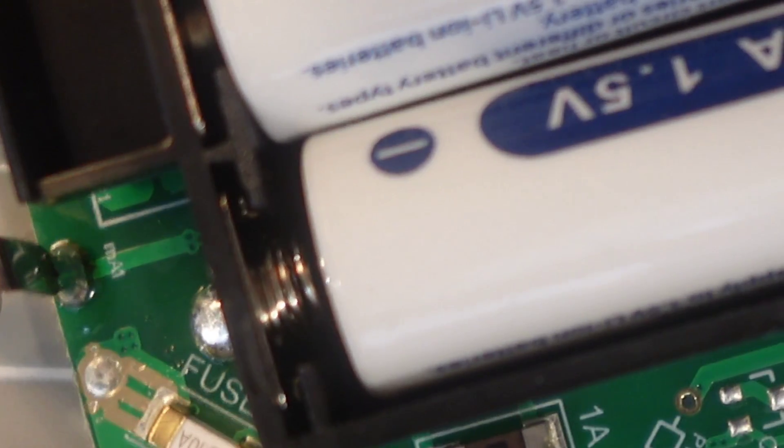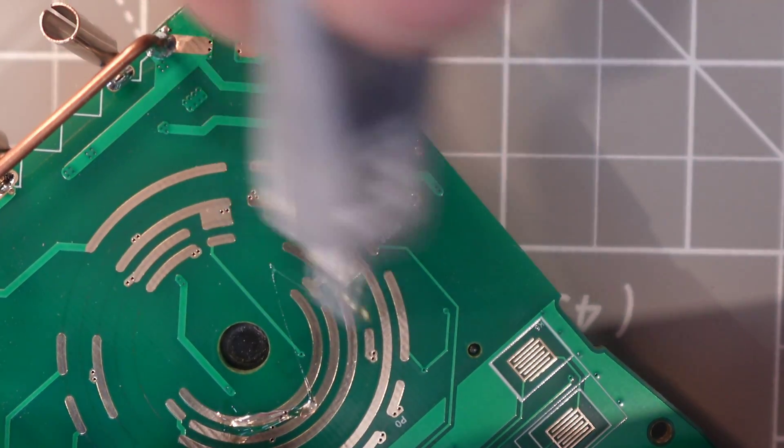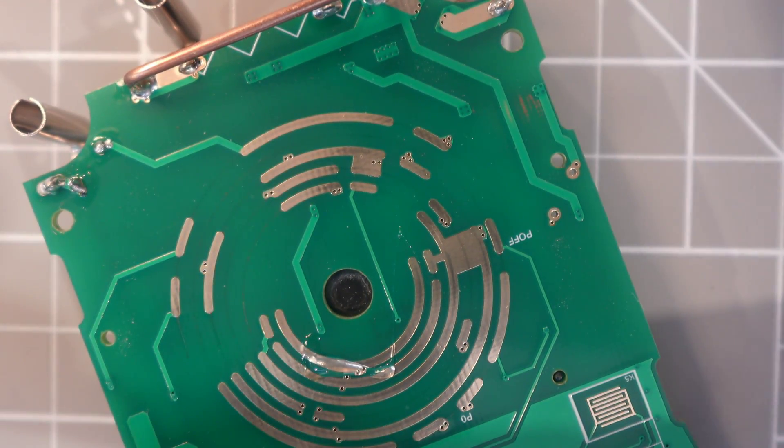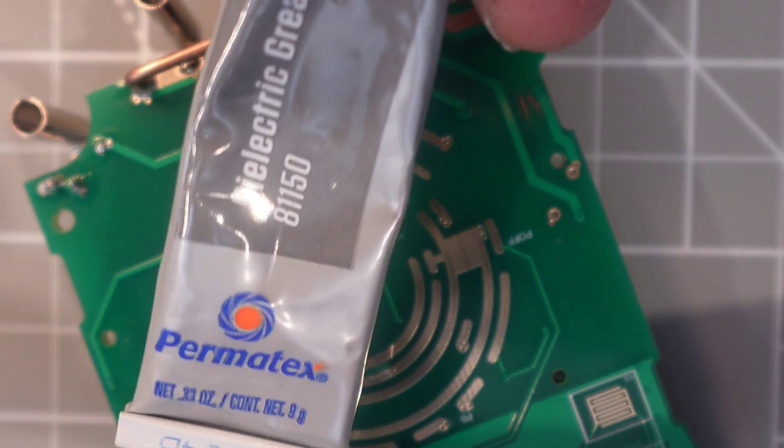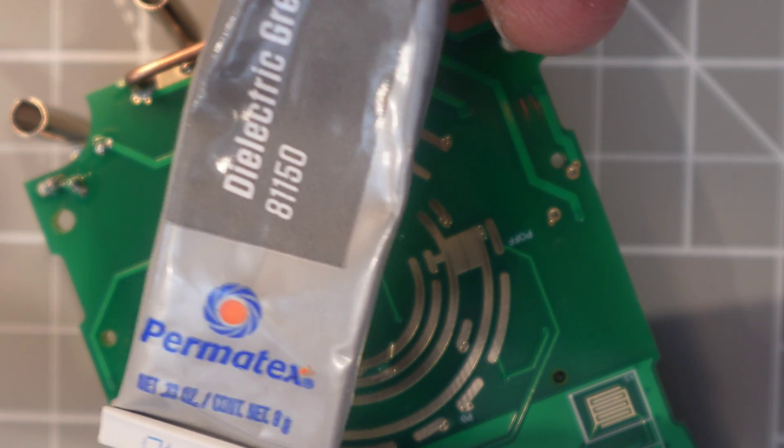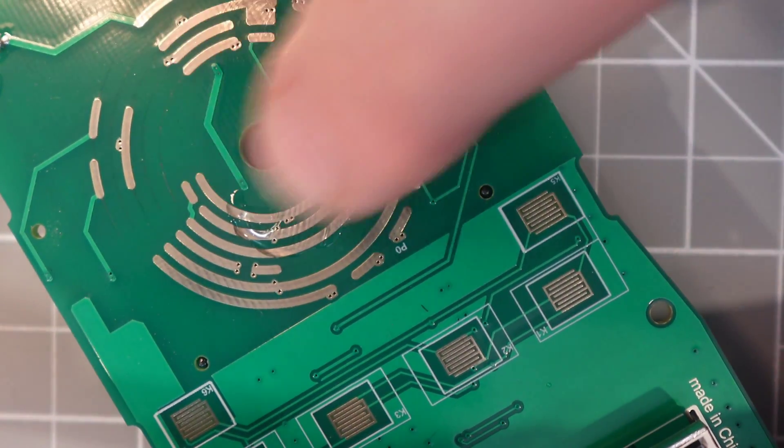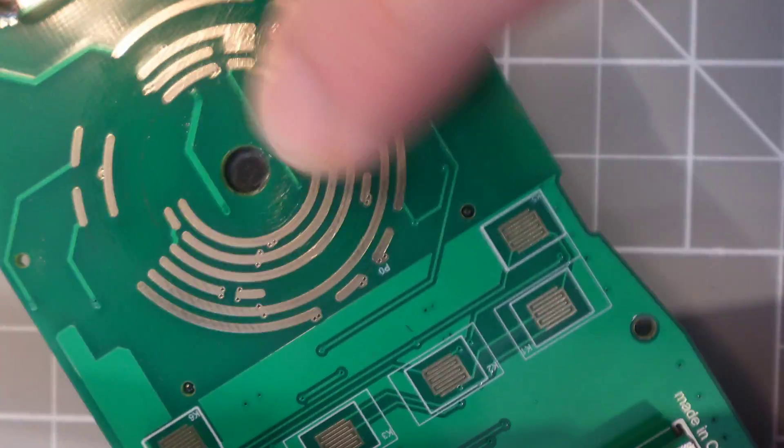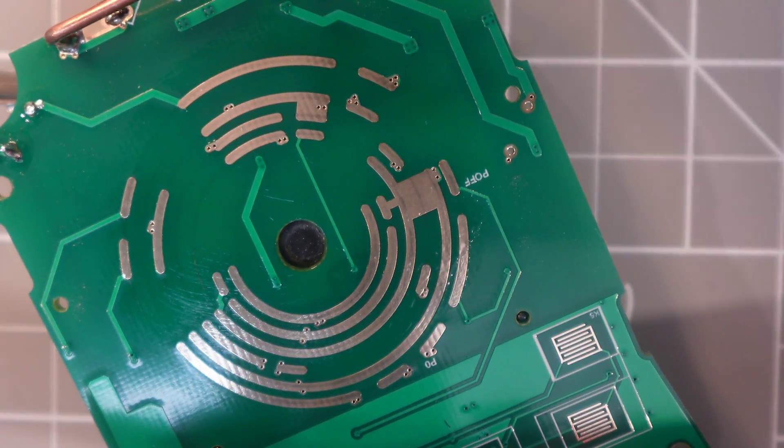Anyway, here's what it is. Just putting a little bit of dielectric on there. I'm using the Permatex here. The electric grease. 8-1-1-5-0. Good stuff. Doesn't take much. Put some on. Give it a little bada-boom, bada-bing with your finger. And I don't know. Maybe it'll make a difference. Maybe not.